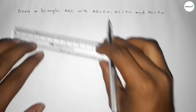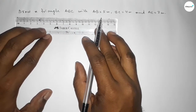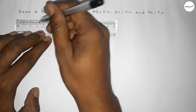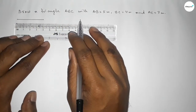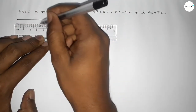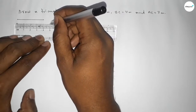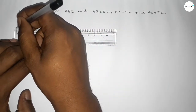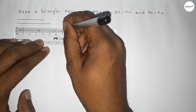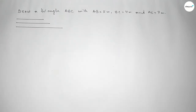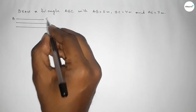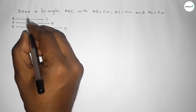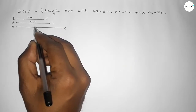First of all, we draw reference lines: a line of length 4 centimeter, another line of length 5 centimeter, and another line of length 7 centimeter. These correspond to side BC (4 cm), side AB (5 cm), and side AC (7 cm).